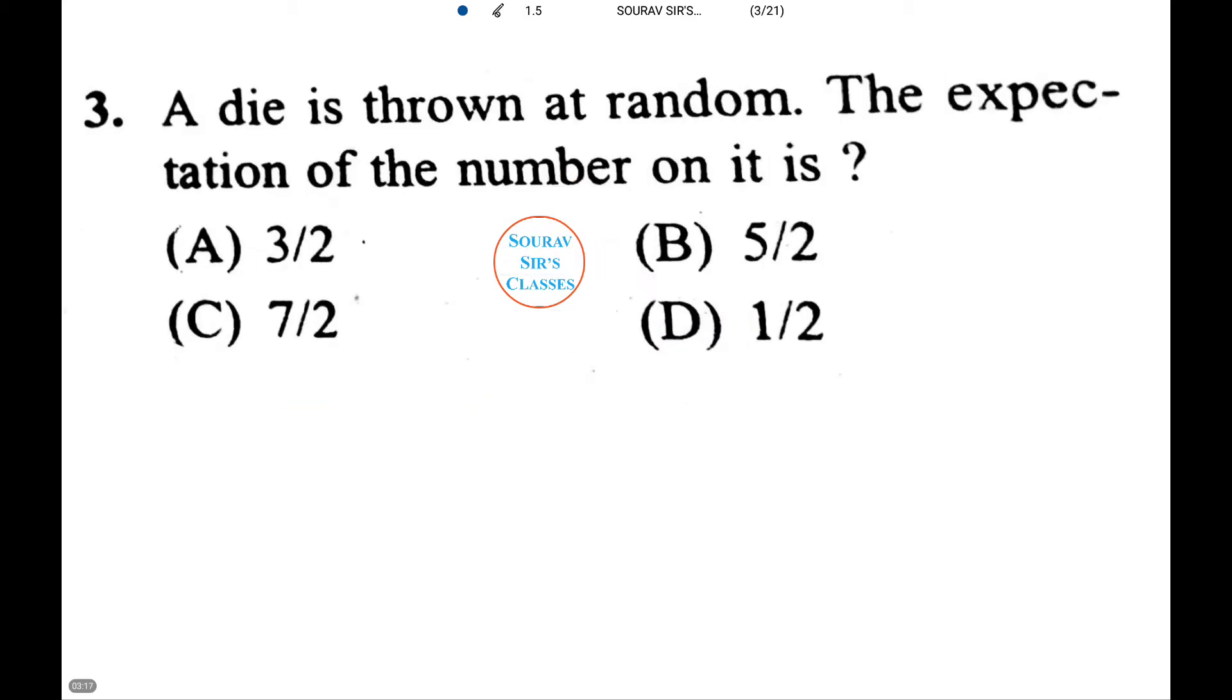Now this is a very famous question. A die is thrown at random. The expectation of the number on it is among the following. Again like the previous case let X denote the number on the die.